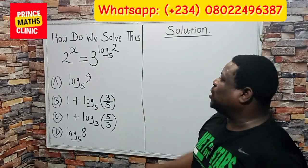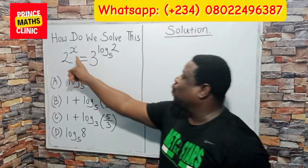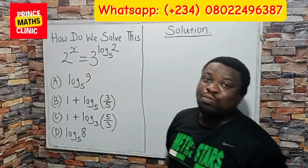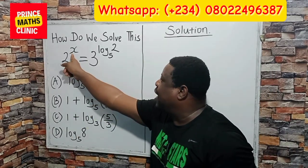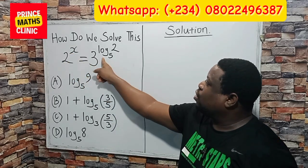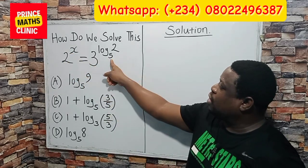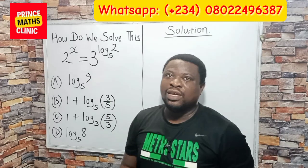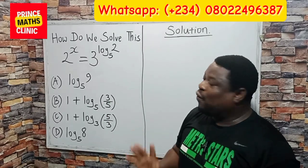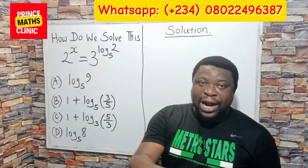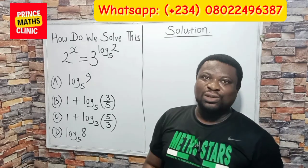Look at the question again. We want to find the value for x that will be true — that when we say 2 to the power of x, it will be equals to 3 to the power of log 2 in base 5. So, let us find out the correct answer to this particular question.